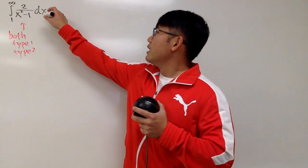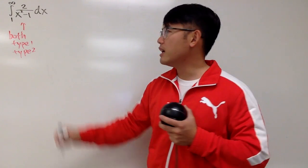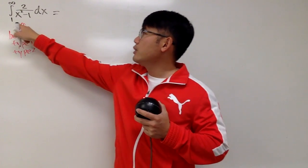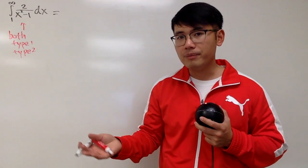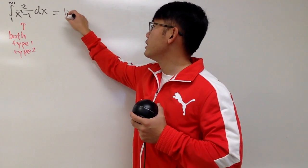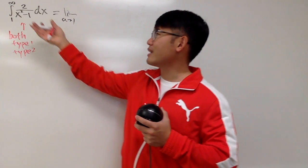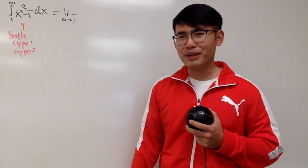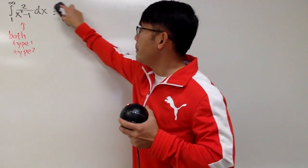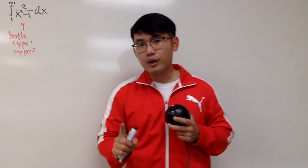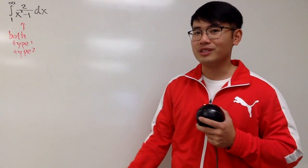This is how we handle an improper integral that's both type 1 and type 2: we are going to write this as two integrals. When you have a trouble place in an improper integral, you have to take the limit. But since infinity is also a trouble place, we'll use properties of integrals to break this apart and then take care of each improper situation separately.